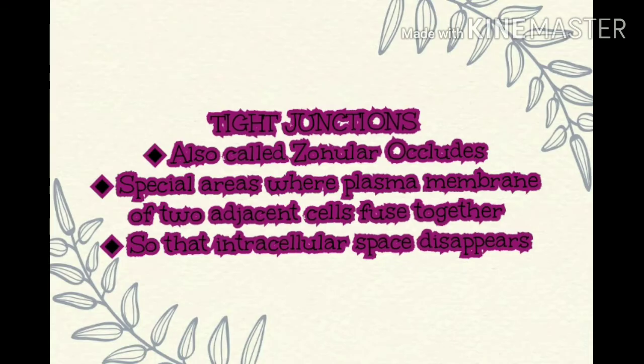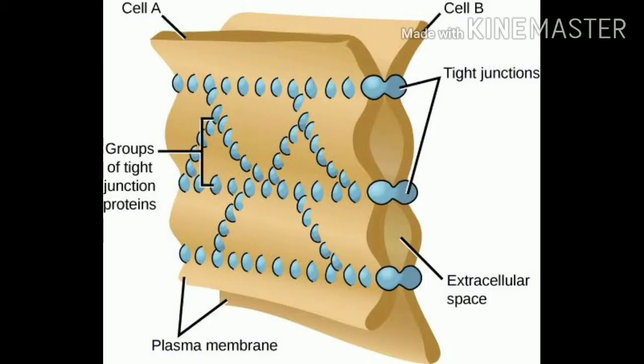The second modification is tight junctions, otherwise called zonula occludens. These are special areas where the plasma membranes of two cells are fused together. They are fused so intimately that the interspace — the space between the two membranes — disappears. Their function is to act as barriers for diffusion. As shown in the picture, these closely packed areas with no visible interspace are called tight junctions.